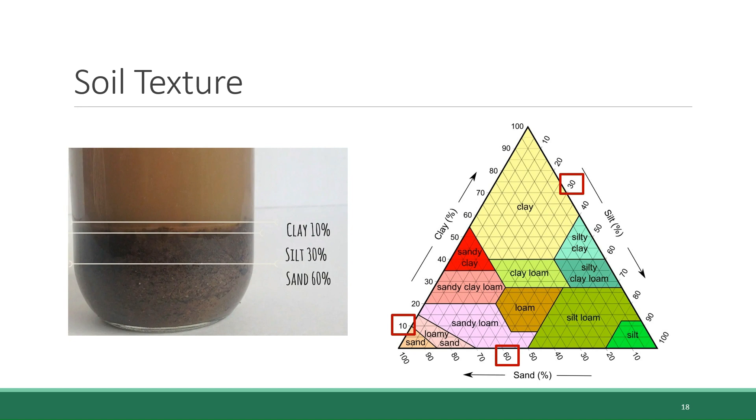So if the soil has 10% clay, 30% silt, and 60% sand, as highlighted here on the triangle, you find the 10% on the side corresponding to the clay, the 30% on the side corresponding to the silt, and the 60% on the side for the sand. Then you follow the lines that are on the grid in the triangle. And you'll notice that the lines are kind of flowing towards each other.